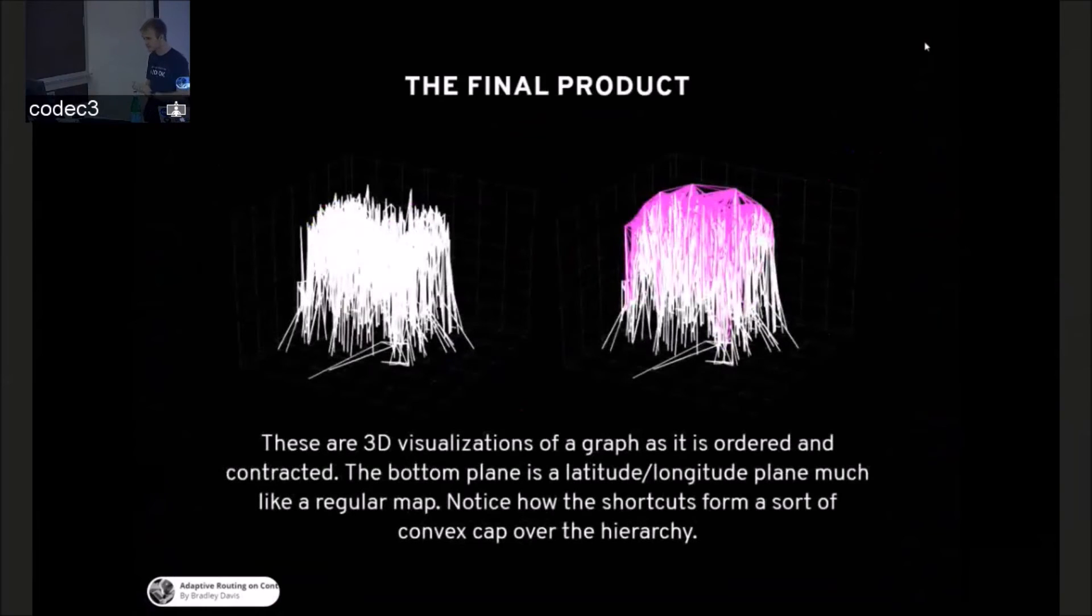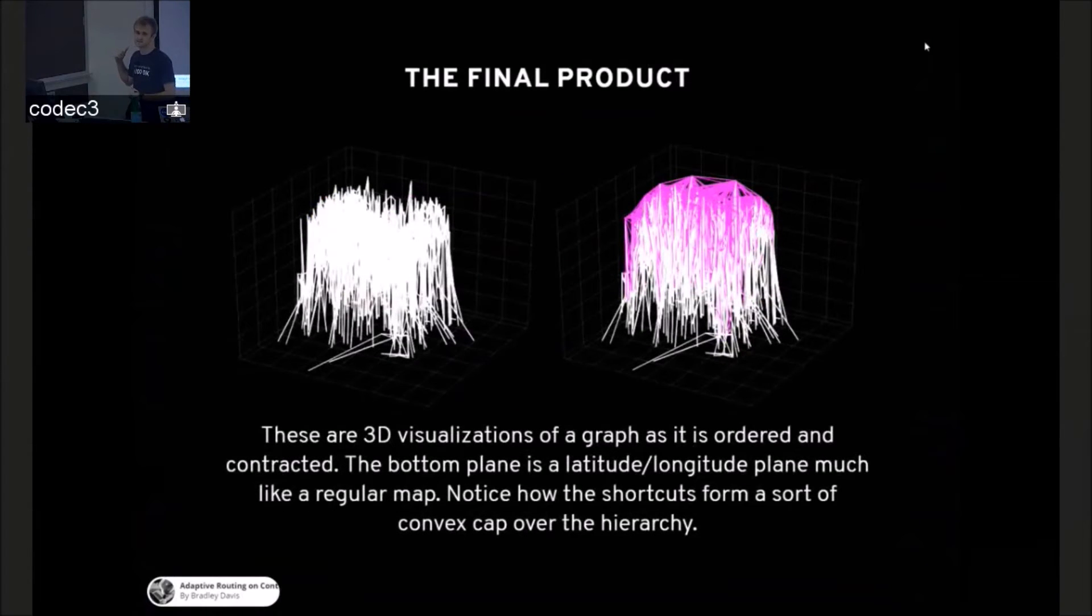The final product is something like this. This is a picture of a node ordering in white. And then after you add the shortcuts, it makes like a convex shape over the top. And that helps visualize the searching algorithm that basically always goes upwards and meets at the top of a hill somewhere.